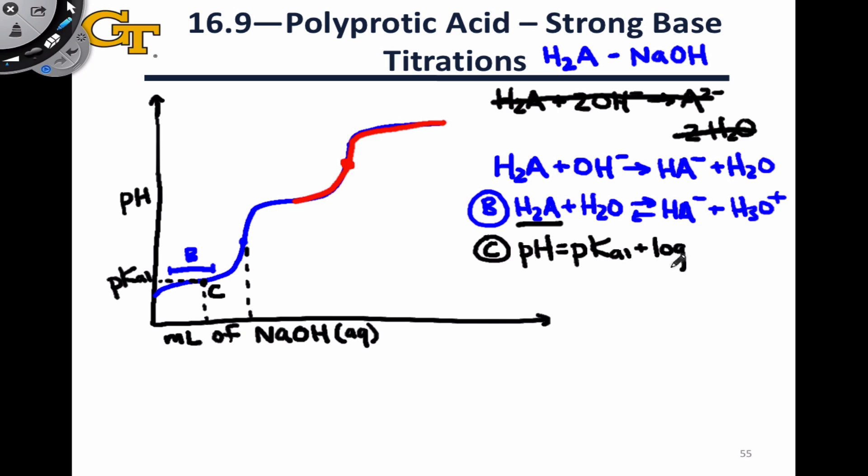plus the log of the ratio of conjugate base to acid concentration. But of course, halfway to the first equivalence point, the concentrations of HA- and H2A are equal, because we've consumed half of the H2A present initially, and so we have half of the H2A left and half of that HA- produced. This divides out to 1, the whole term drops out as 0, and we end up with pH equals pKa1.